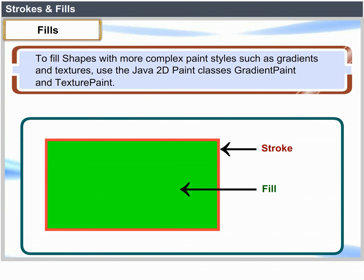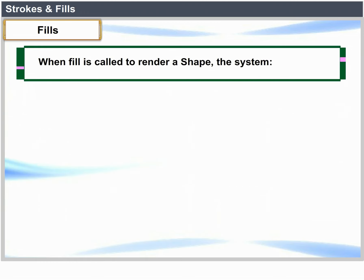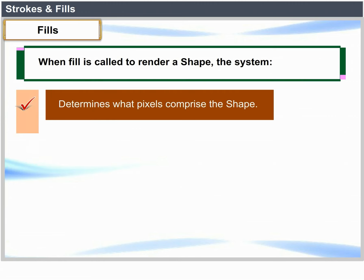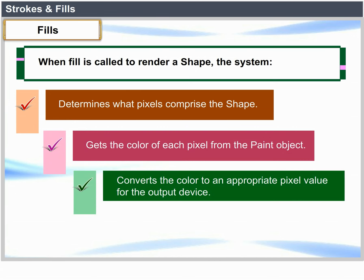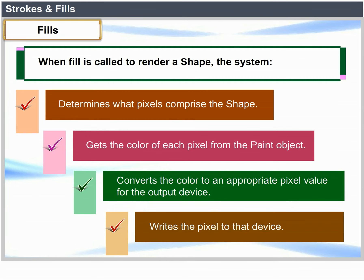To fill shapes with more complex paint styles such as gradients and textures, use the Java2D paint classes GradientPaint and TexturePaint. When fill is called to render a shape, the system determines what pixels comprise the shape, gets the color of each pixel from the paint object, converts the color to an appropriate pixel value for the output device, and writes the pixel to that device.